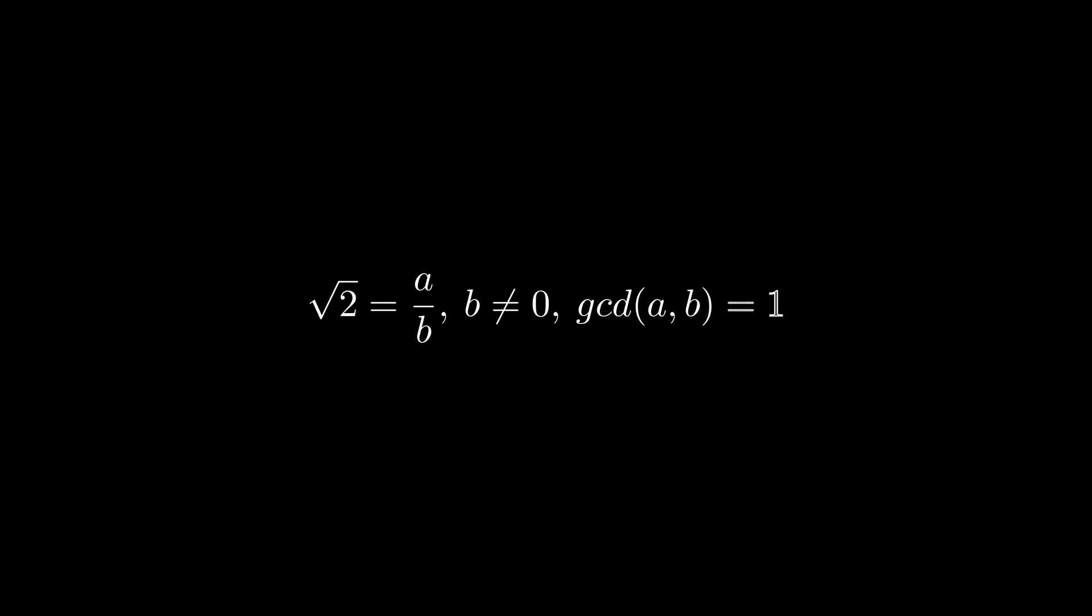So, because it is rational, we will say that it is equal to a over b, where b does not equal 0, and the GCD is 1. The GCD being 1 means that it is fully reduced.